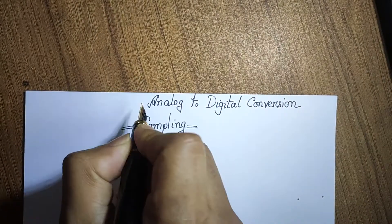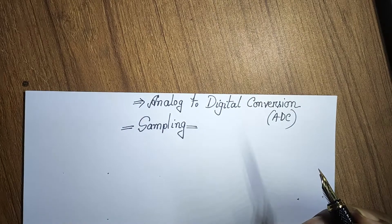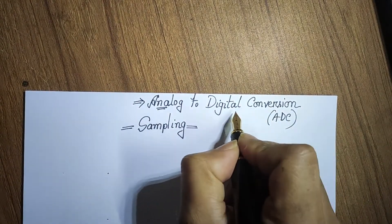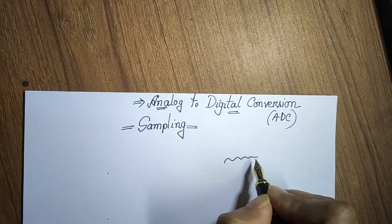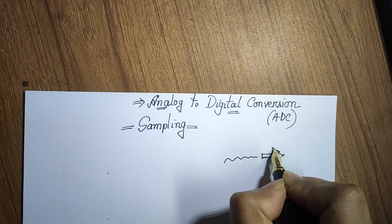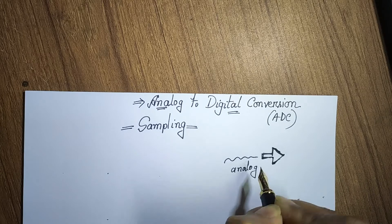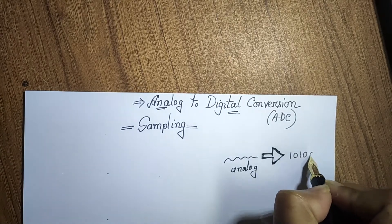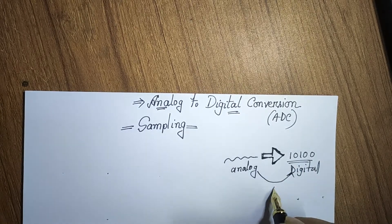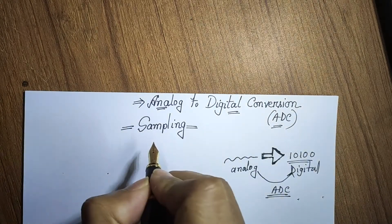Today's topic is Analog to Digital Conversion, or ADC. In most cases, the signals we obtain are analog, and in order to process them in a computer we need to convert them to a digital signal. All signals we get from nature have to be converted to binary — ones and zeros. Without conversion, you cannot perform digital operations on an analog signal. Any analog signal must be converted to a combination of ones and zeros, which is what ADC does.